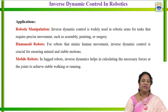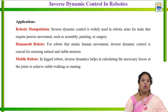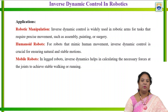The various applications which involve inverse dynamics in robotics include robot manipulators, humanoid robots, and mobile robots. For robot manipulators, it is generally used in a wide range of robot arms that require precise movement, such as assembly, painting, and surgeries. For humanoid robots, when mimicking human movement in order to give proper human motion, inverse dynamic control is very crucial for ensuring natural and stable motion. For legged robots, inverse dynamics helps in calculating the necessary forces at the joints to achieve stable walking and running of the mobile robot.